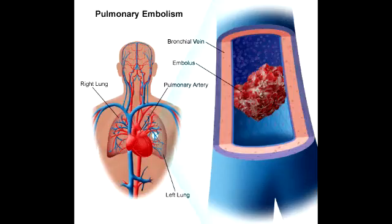What is pulmonary embolism? Pulmonary embolism is a blockade of the main artery of the lung or one of its branches by a substance that has traveled from somewhere else in the body through the bloodstream.